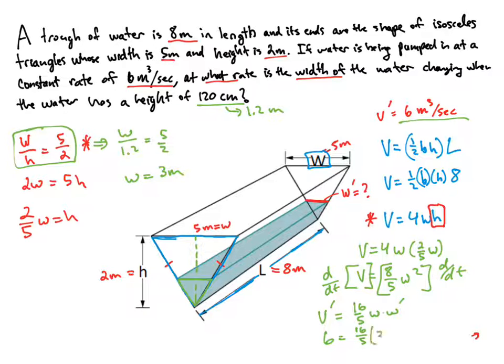So I'm going to substitute that in down here and then we can divide and solve for W prime. And doing so, I'm going to end up with a value for W prime of 0.625 and that is meters per second.